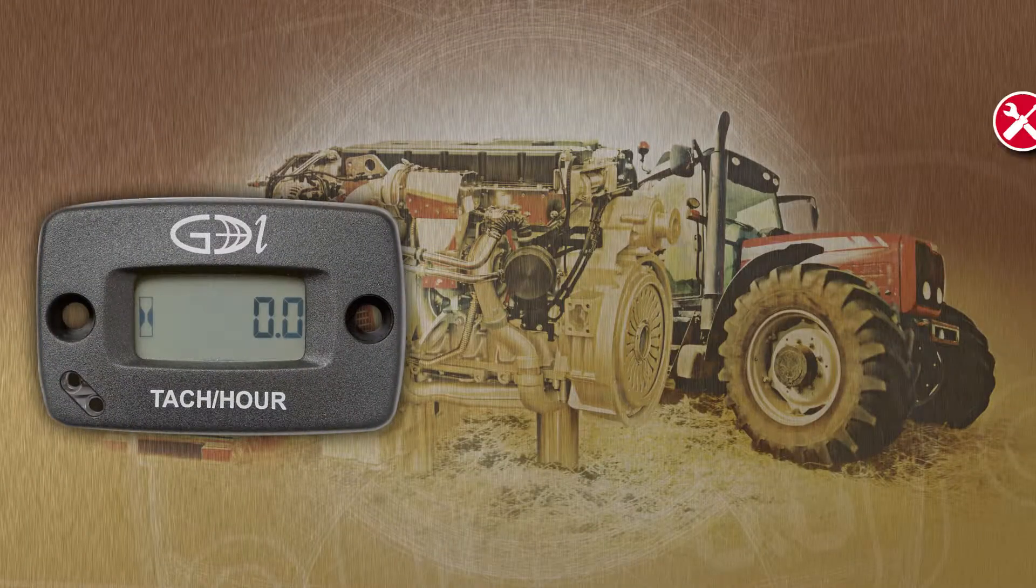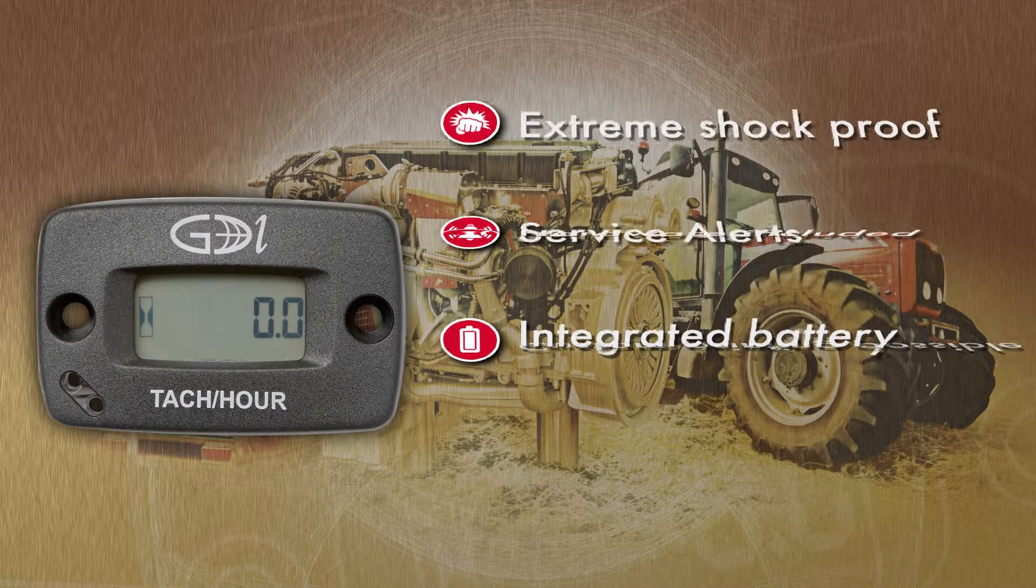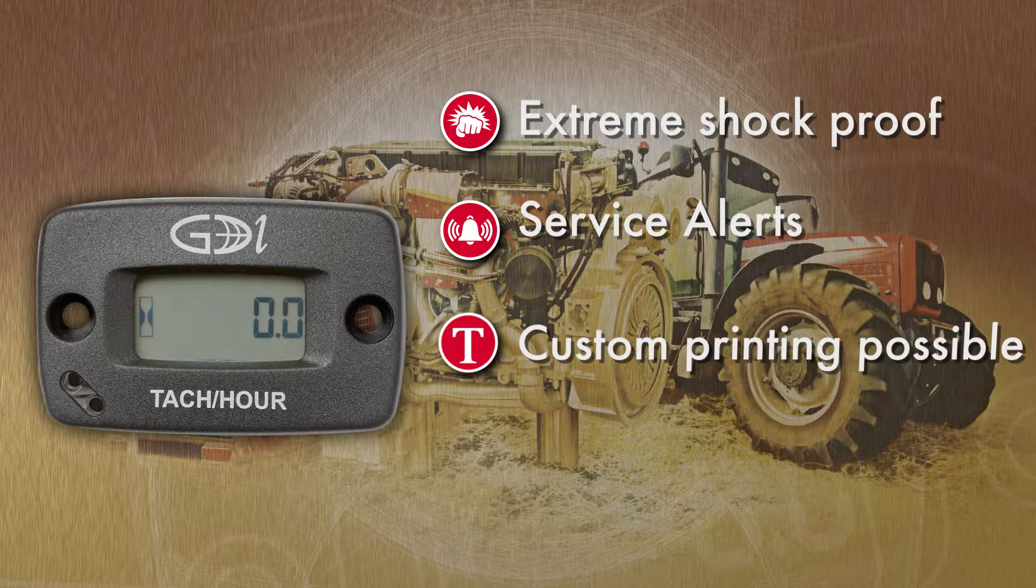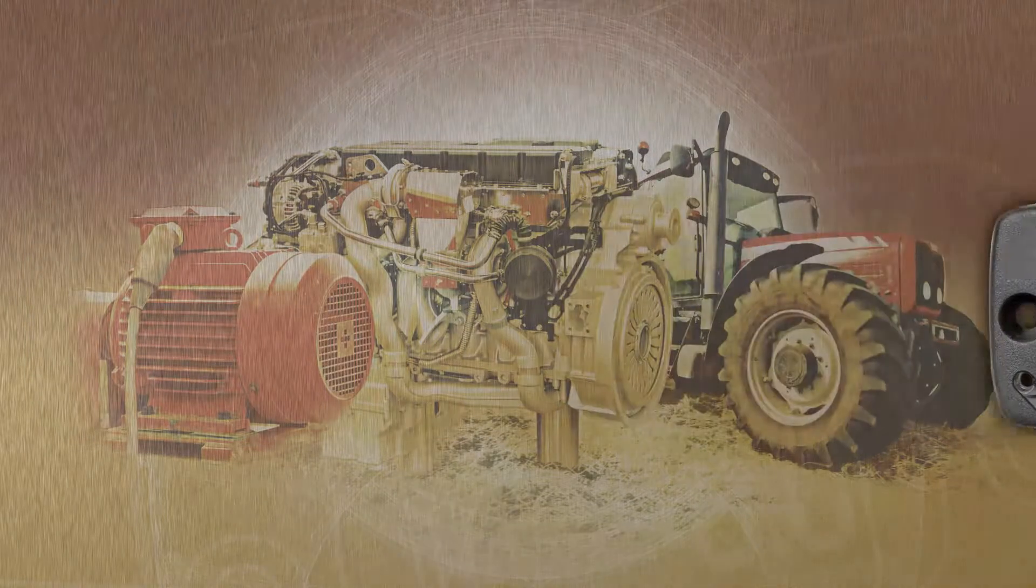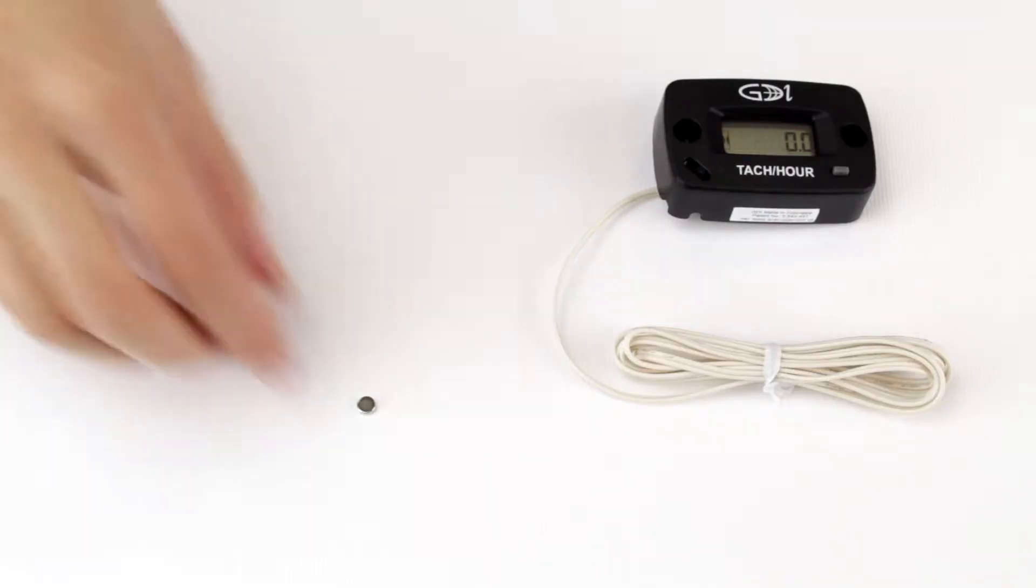It comes with a lot of unique features and with all hardware included. It includes screws, an ultra-tiny pickup magnet, and the meter with the RPM pickup sensor.